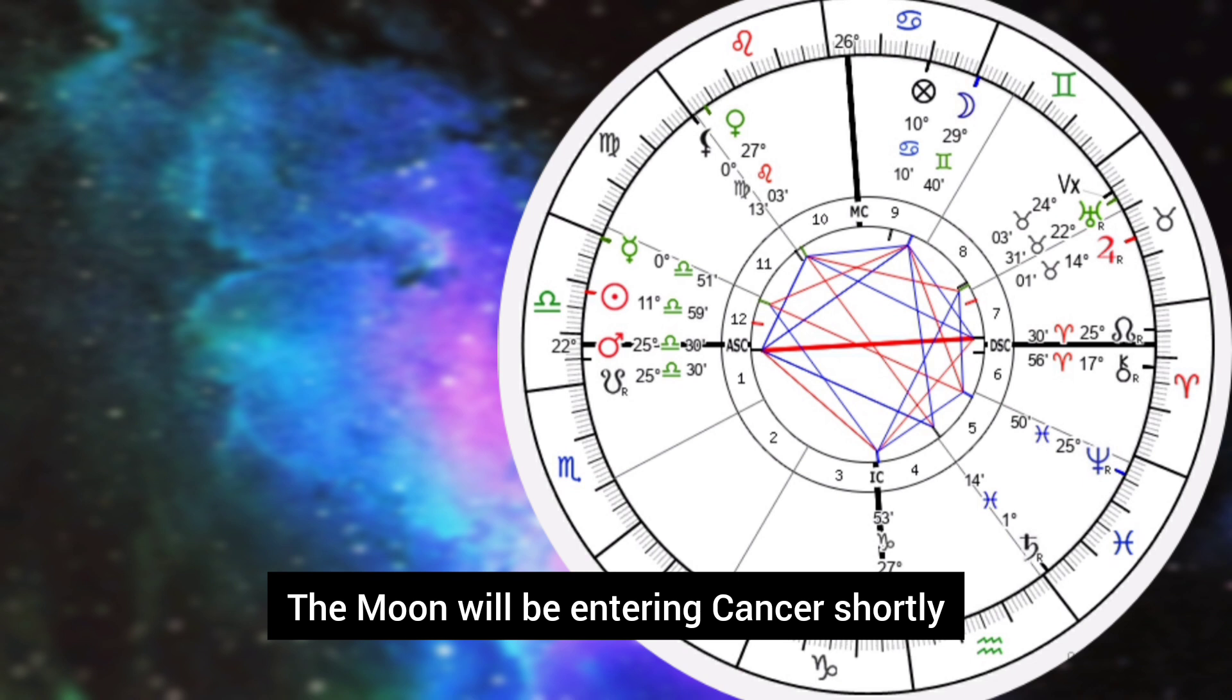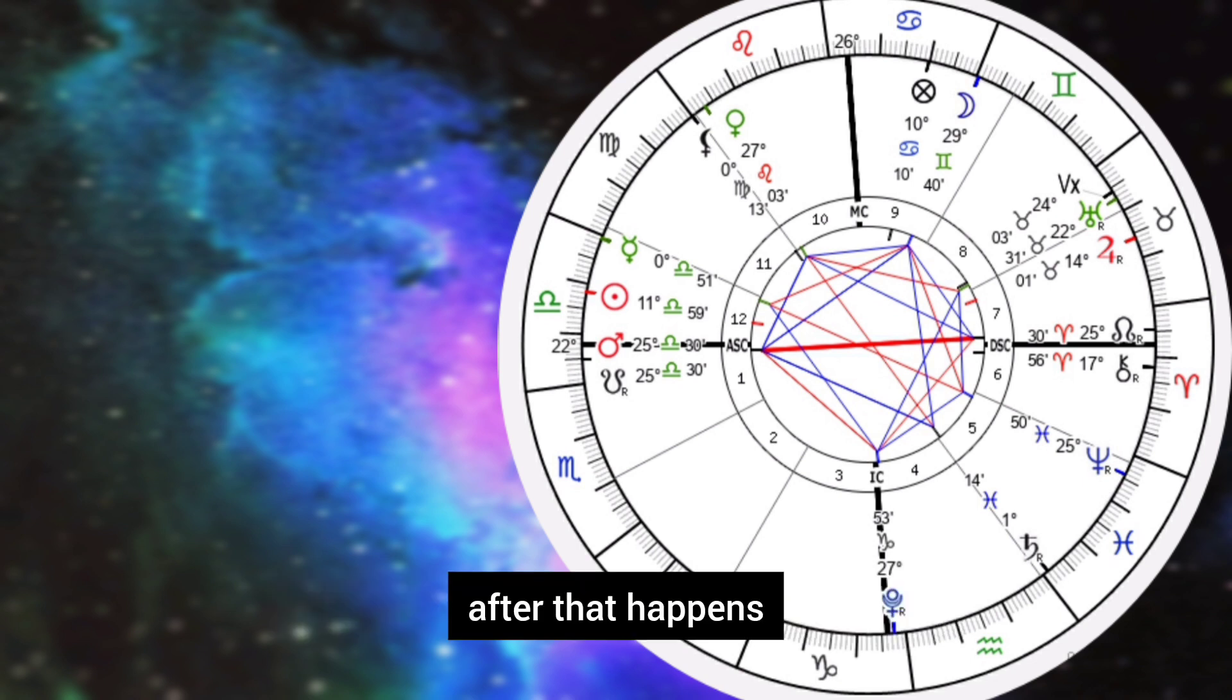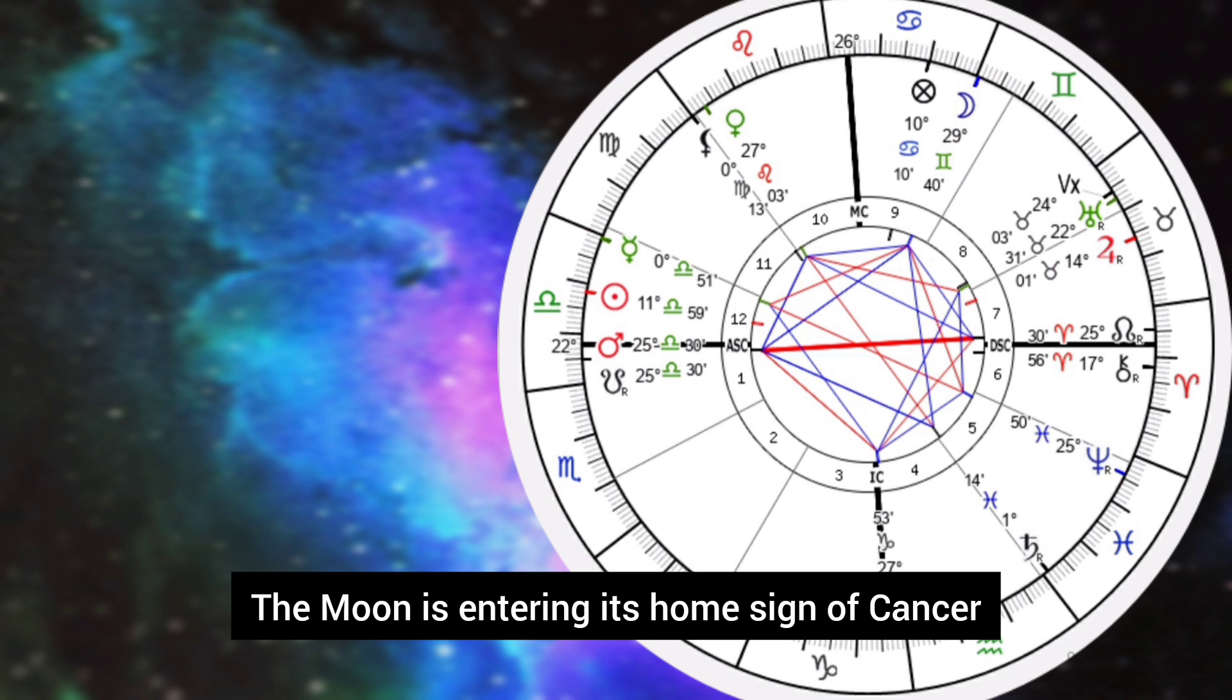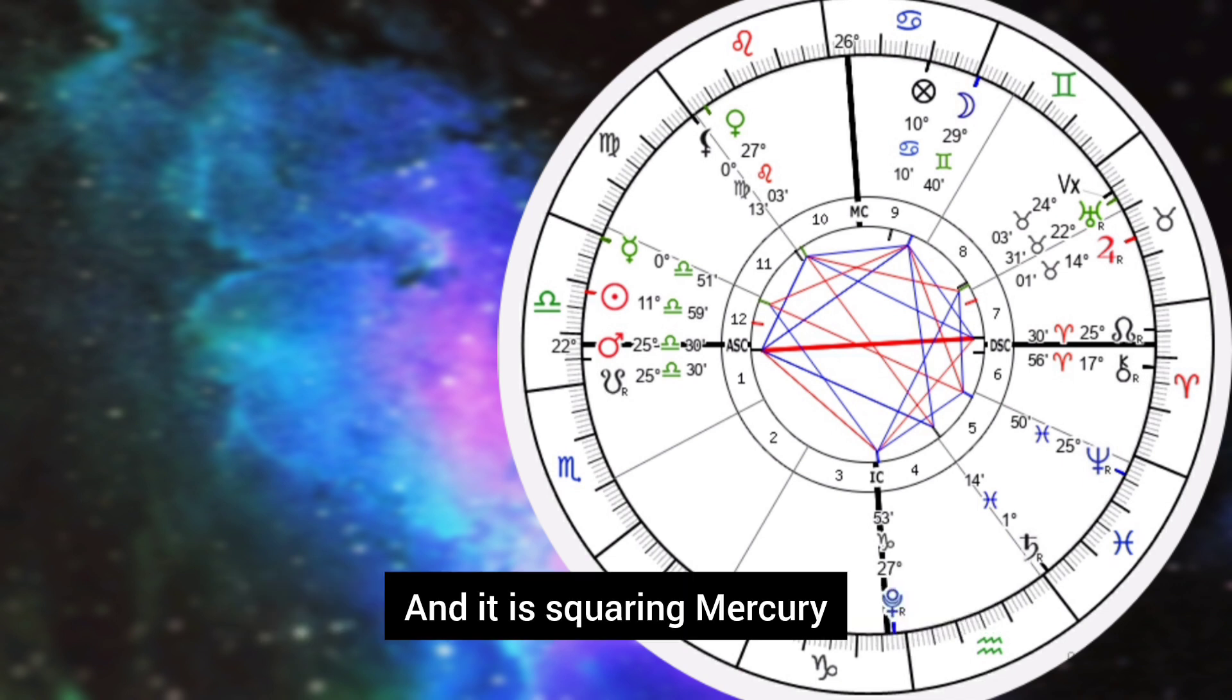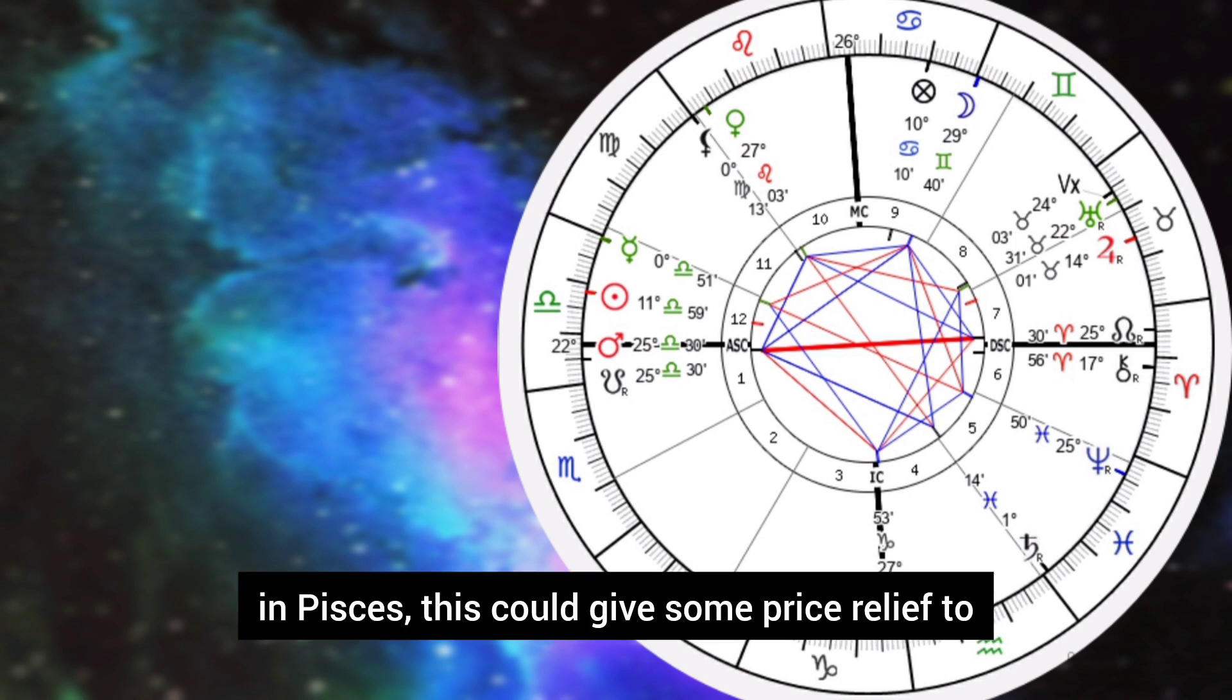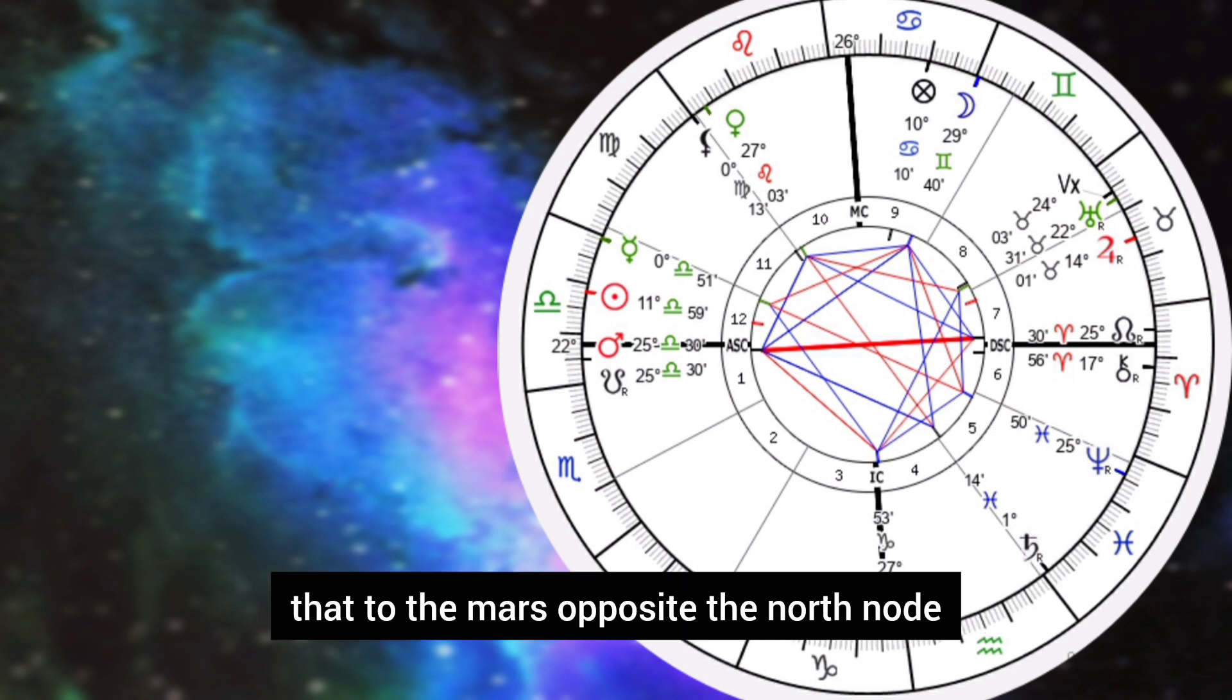The moon will be entering Cancer shortly after that happens. The moon is entering its home sign of Cancer and it is squaring Mercury and then trining Saturn shortly afterwards. The moon trining Saturn in Pisces could give some price relief to the Mars opposite the north node.